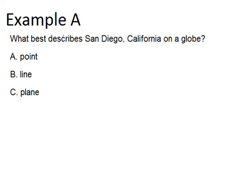Example A says, what best describes San Diego, California on a globe? And you guys should know that San Diego is a city. So is it a point, a line, or a plane?